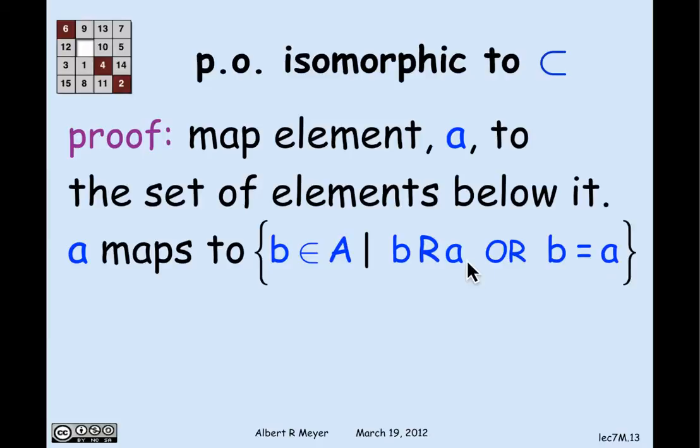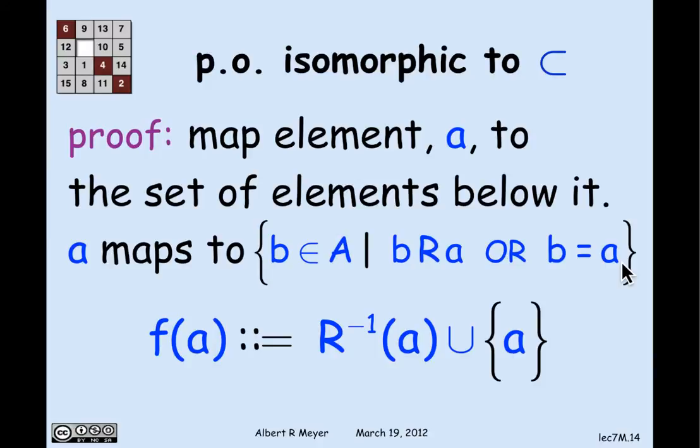And that is added for a technical condition. Remember, r is strict. So a is not related to a under r, but I want it to be in the set that a maps to. So I'm throwing that in. Another way to say this is that the mapping f of a is equal to r inverse of a union a.